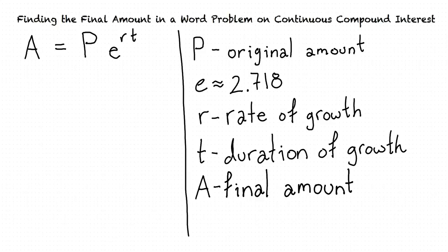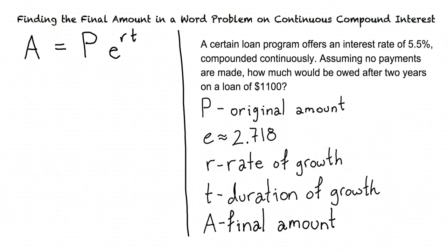Let's try an example. A certain loan program offers an interest rate of 5.5% compounded continuously. Assuming no payments are made, how much would be owed after two years on a loan of $1,100?